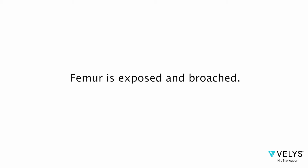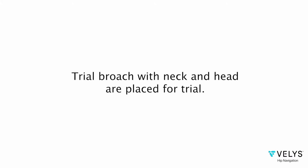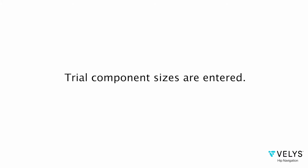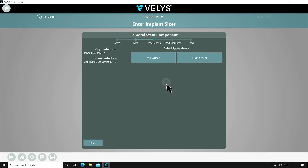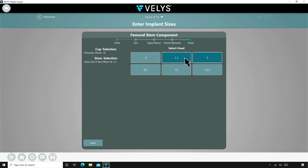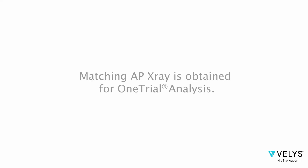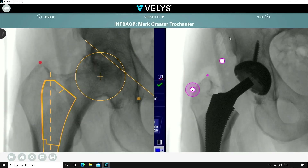The femur is then exposed and broached. A trial broach with neck and head are placed for trial. For this patient, I opted to trial with a size 9 standard offset stem and a plus 5 head. Once the trial is in place, you then obtain another AP hip image. This is then used by the sales consultant to register the reference points.